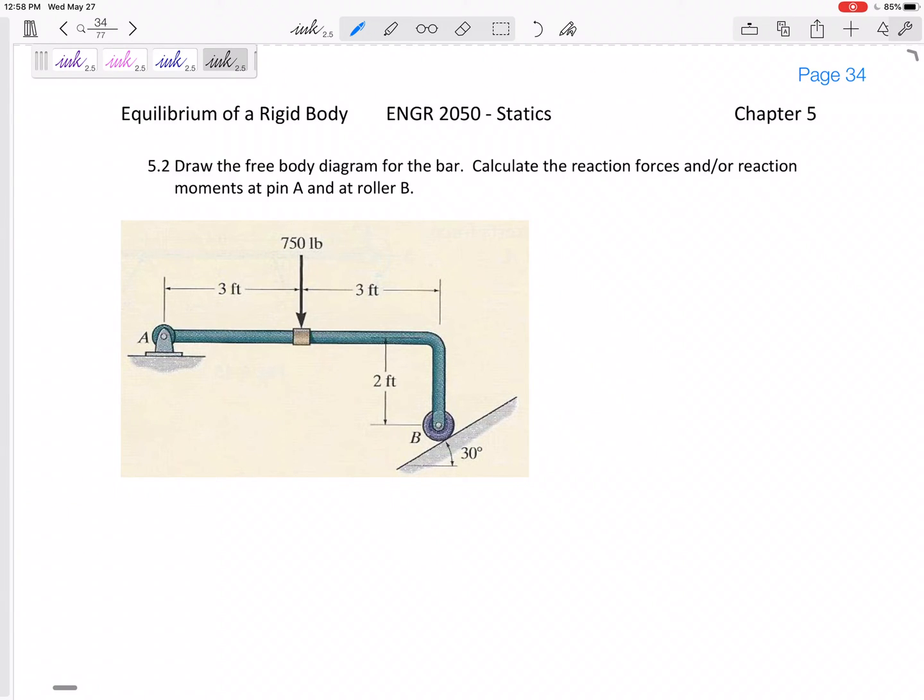All right, so let's look at another one: free body diagrams of a rigid body that is in equilibrium. We know the sum of the force in x equals zero, sum of the force in y equals zero, sum of the moments equals zero. Let's draw the free body diagram and calculate whatever is happening at pin A and roller B.